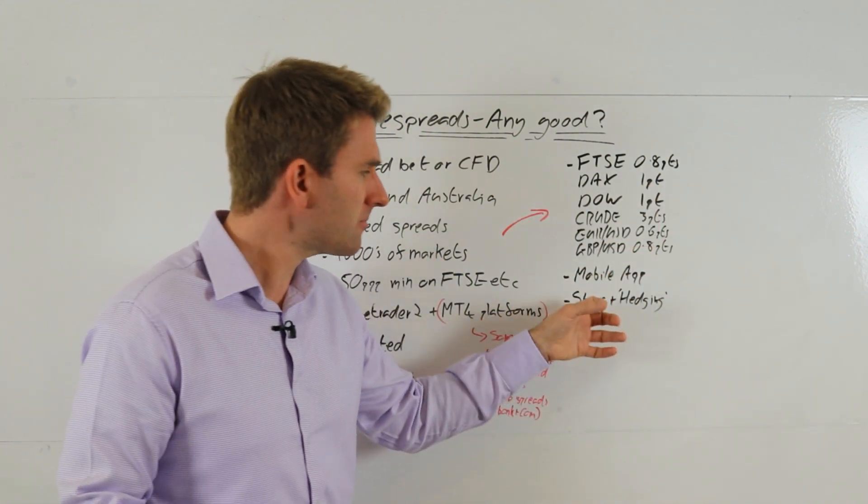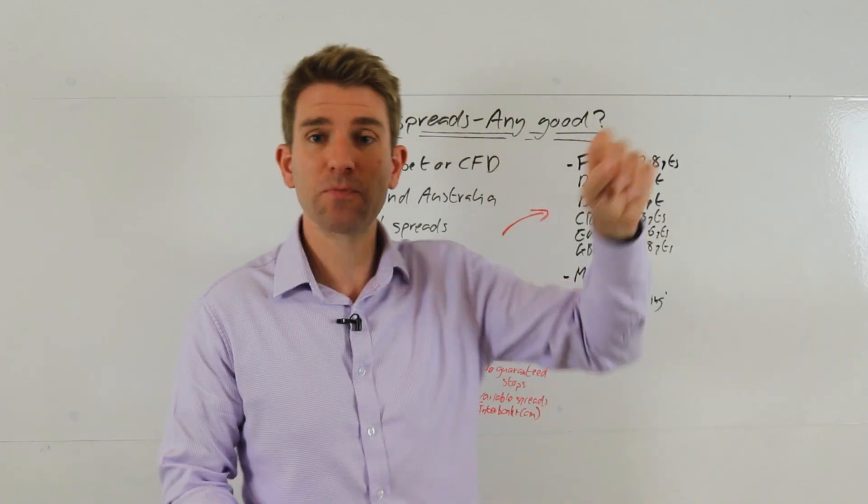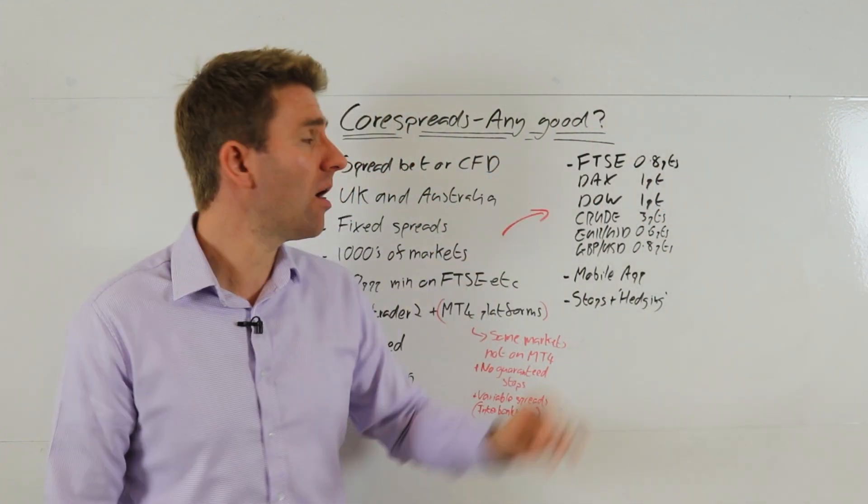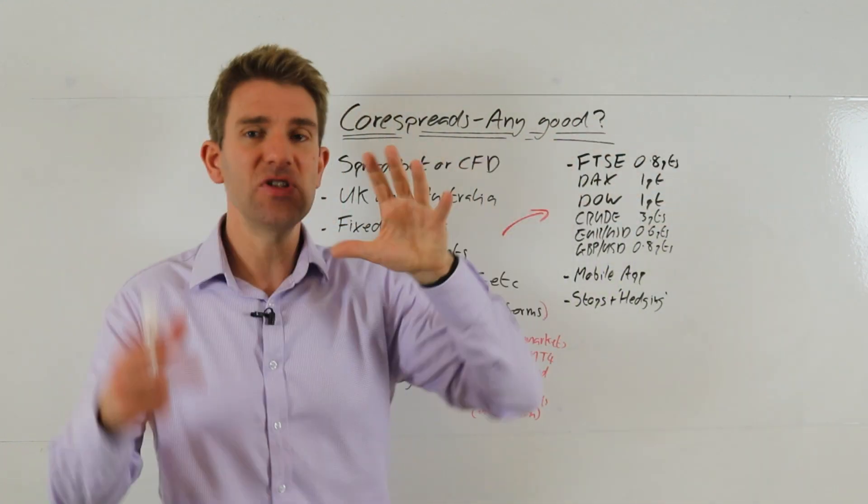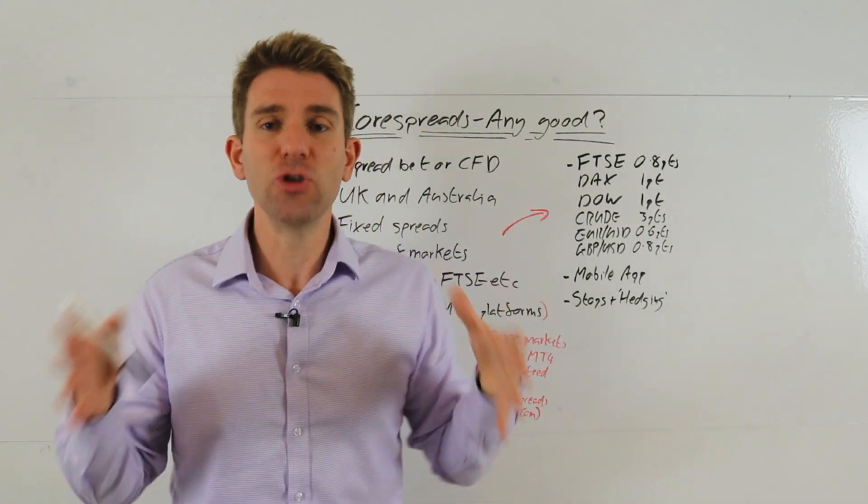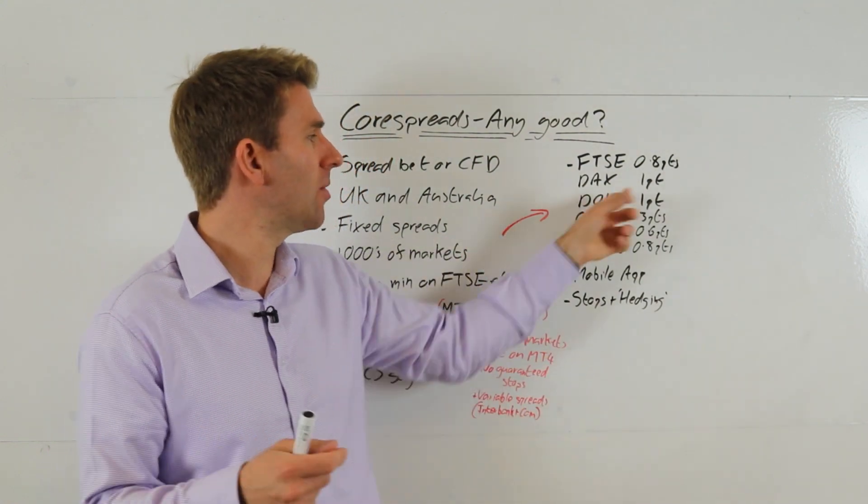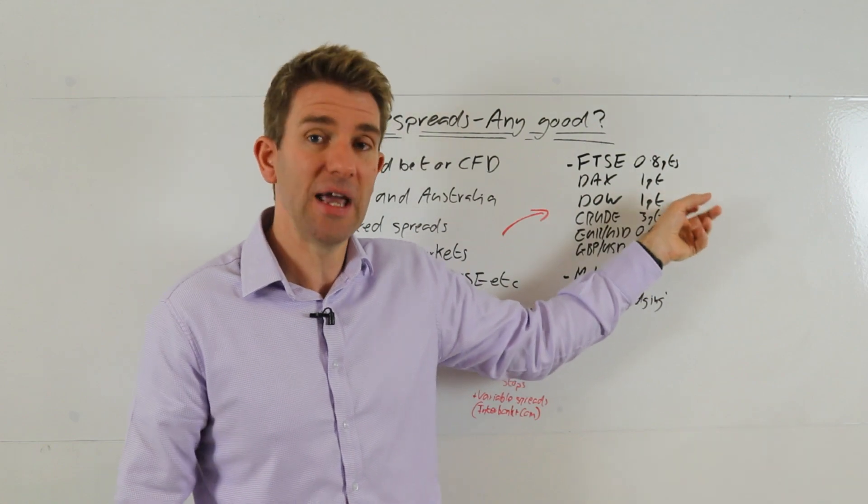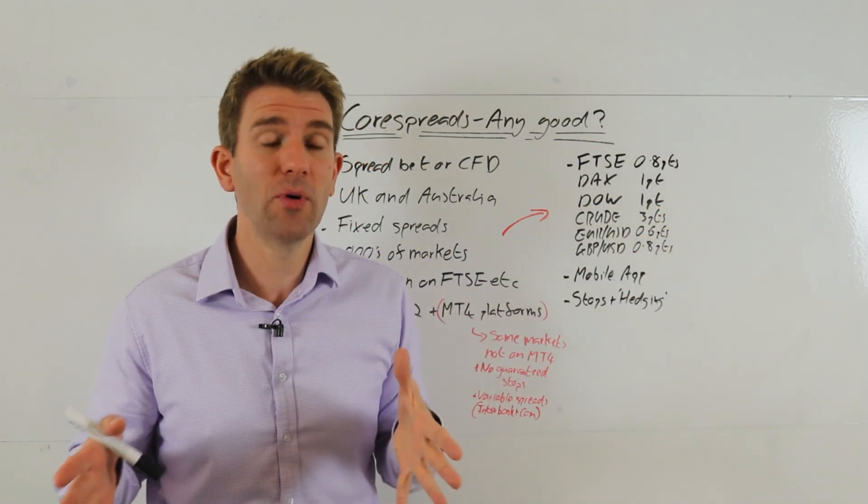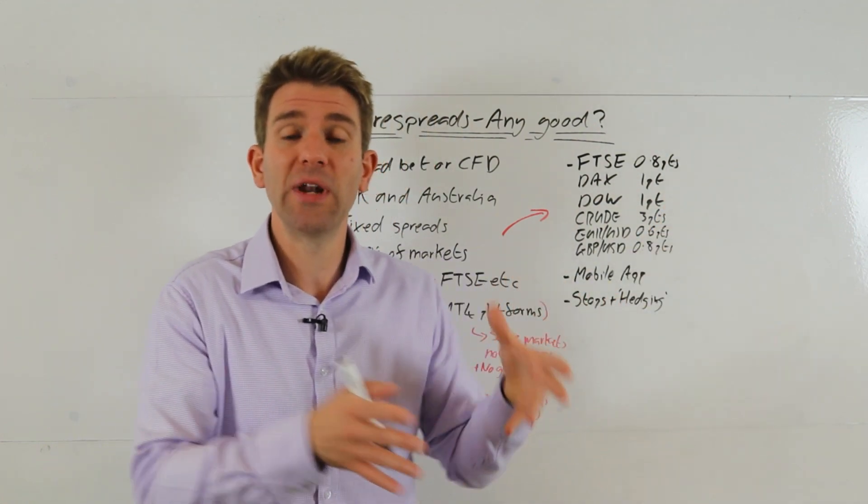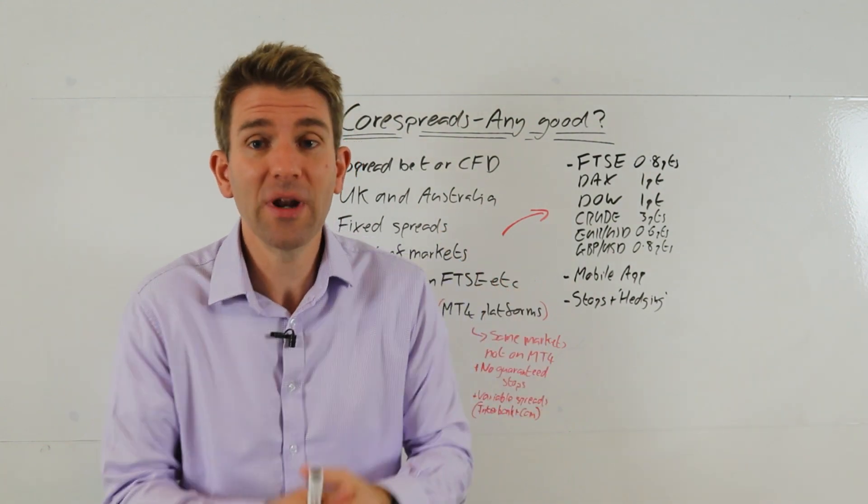They've got a mobile app - handy. And we'll look at orders in a second. So spreads at the time of doing this video - they are fixed, okay? This is in market hours. After market hours they do vary, they might change a little bit. I know I looked and the Dow was one point in market hours, but only went to two points just before the market opened. Now I haven't checked it at three o'clock in the morning - maybe it's a little bit wider. So again, a little bit of due diligence: work out exactly when you trade.